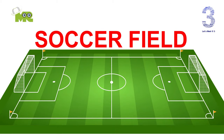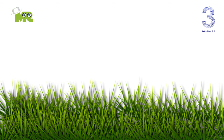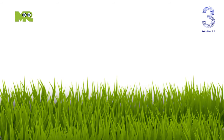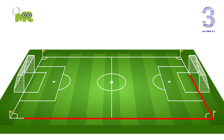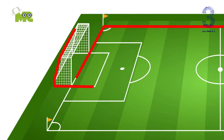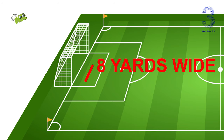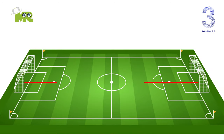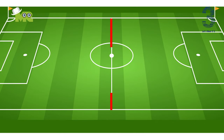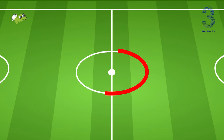A football field is also known as a soccer field or football pitch. Soccer can be played on either grass or artificial turf, but the surface must be green in color. The game is played on a rectangular field with a goal post at each end. The goal is eight yards wide and eight feet high, placed at the center of the goal line. At the middle of the field is the center line, which cuts the field in half, and at the very center is the center circle.